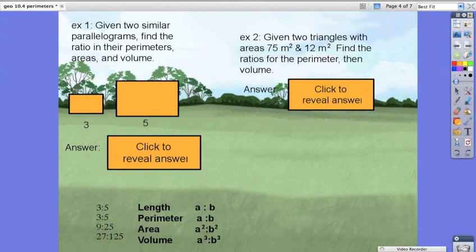For example two, it says, given two triangles with areas 75 meters squared and 12 meters squared, find the ratio for the perimeter, then the volume.